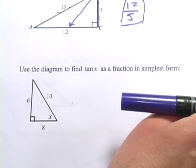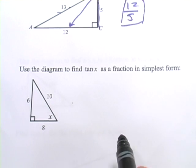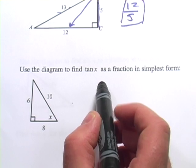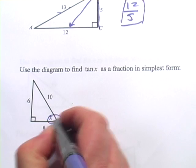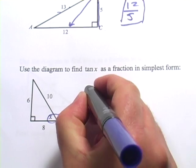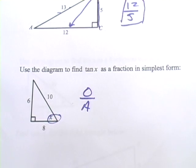Let's do one more. This one says use the diagram to find tangent of X as a fraction in the simplest form. So here's angle X, and we want the opposite over the adjacent, TOA.